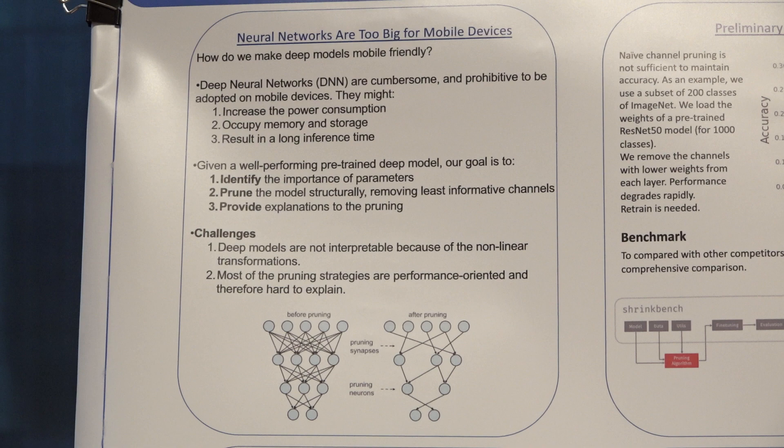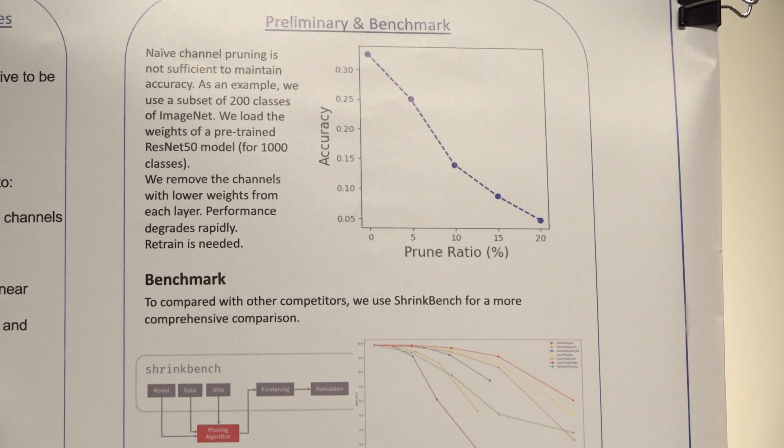Researchers at MIT made a platform called ShrinkBench that allows you to compare your pruning method with other benchmarked methods. That's what you can see here. You can also see generally the problem of the trade-off between accuracy and pruning.